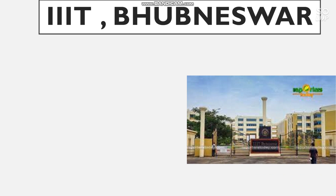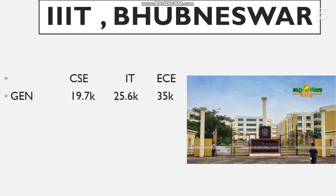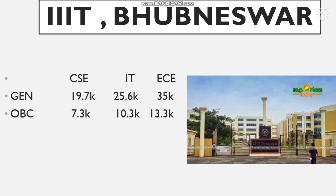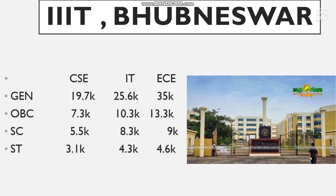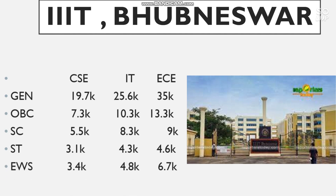Number 5 is IIIT Bhubaneswar — it is a GFTI, it does not come under the IIIT colleges in JOSAA counseling but under GFTI. Cutoff for CS, IT, and EC: General — 19,700, 25,600, and 35,000; OBC — 7,300, 10,300, and 13,300; SC — 5,500, 8,300, and 9,000; ST — 3,100, 4,300, and 4,600; EWS — 3,400, 4,800, and 6,700.